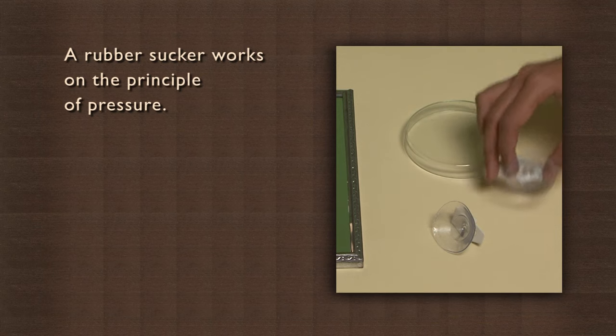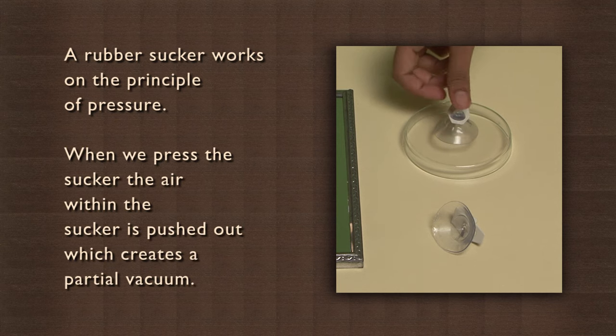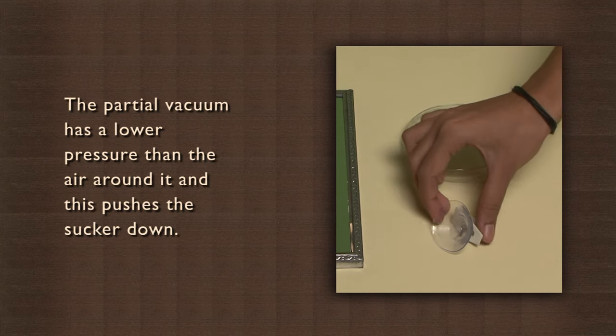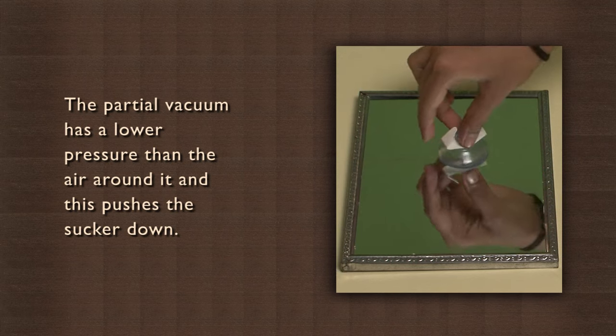A rubber sucker works on the principle of pressure. When we press the sucker, the air within the sucker is pushed out which creates a partial vacuum. The partial vacuum has a lower pressure than the air around it and this pushes the sucker down.